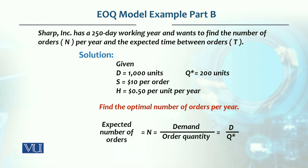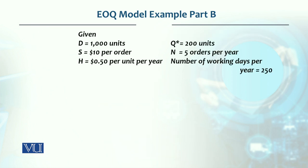The number of orders is D over Q, which is 1000 divided by 200, giving us 5 orders per year. As I mentioned before, it is 5 orders per year.